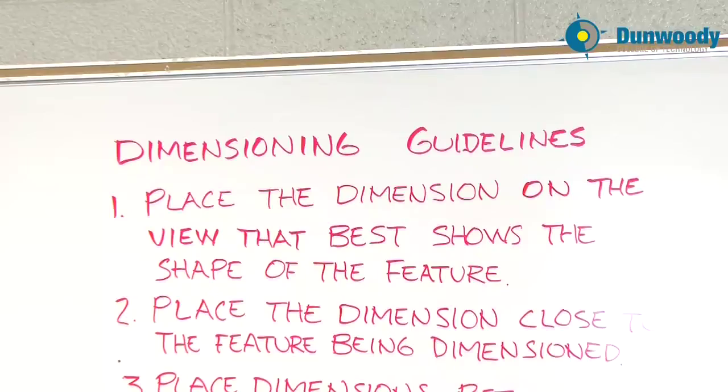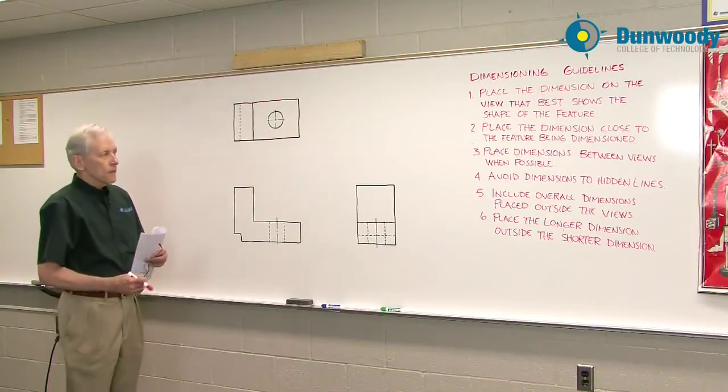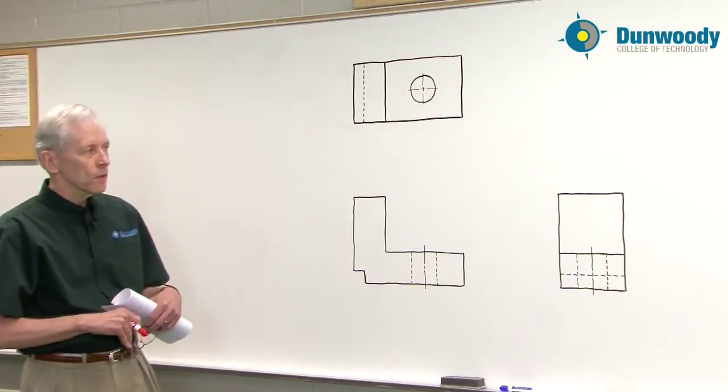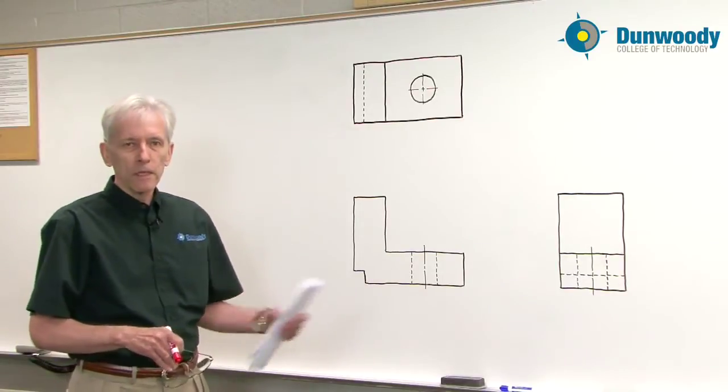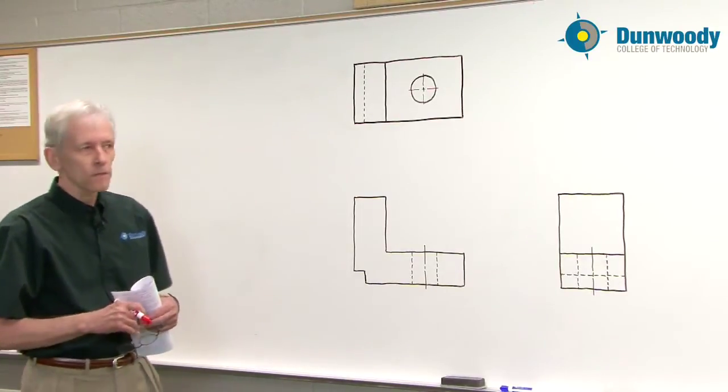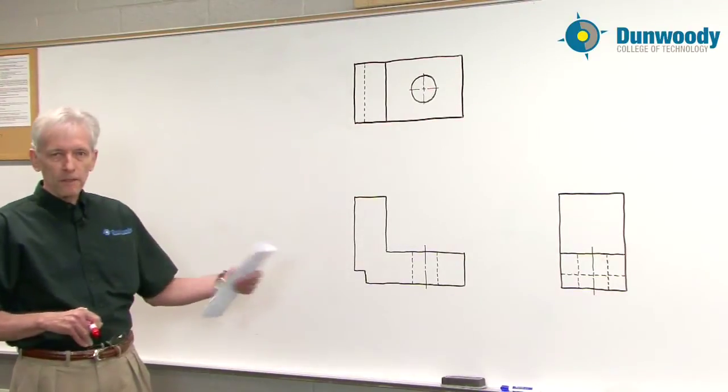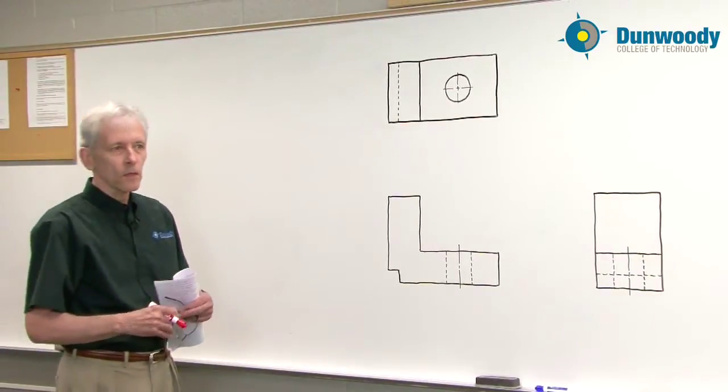The first guideline says place the dimension on the view that best shows the shape of the feature. This one might seem obvious to people. But surprisingly this is one of the most common mistakes on beginners sketches and drawings.